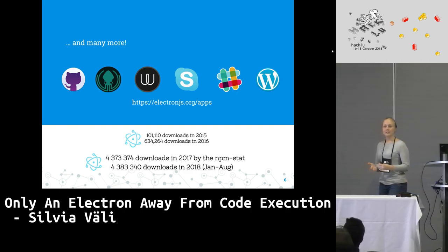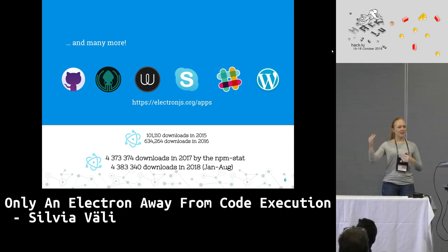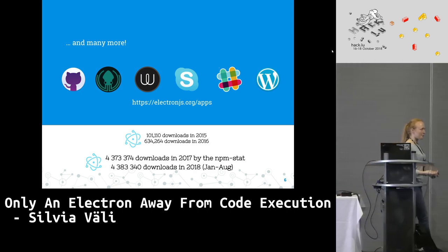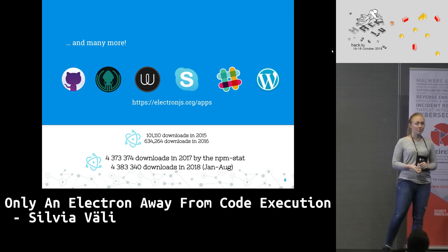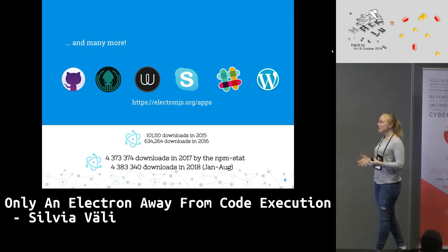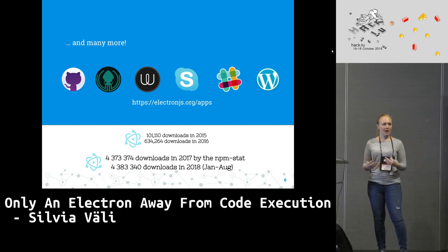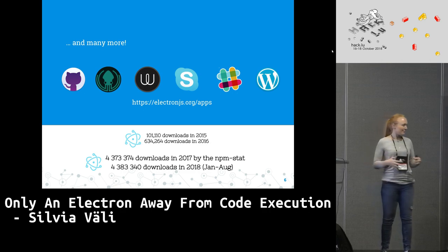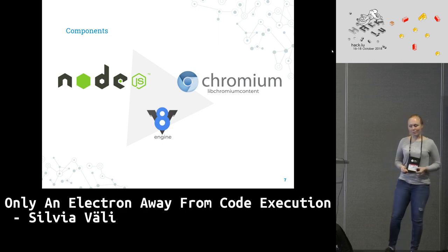A lot of big names have adopted the Electron framework — Slack, Git Kraken, Wire, WordPress, and many others. Electron's official site has a huge list of applications proudly promoting the framework and announces monthly featured apps. From just over 100,000 downloads in 2015, Electron reached over 4.3 million downloads by 2018, so the user base has grown enormously. People are really interested in using the framework because it's actually super easy to get into.